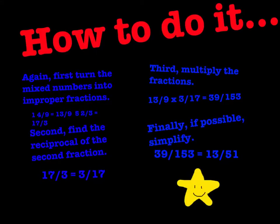Third, multiply the fractions. 13 over 9 times 3 seventeenths equals 39 over 153. Finally, if possible, simplify the fraction. 39 over 153 would equal 13 over 51.